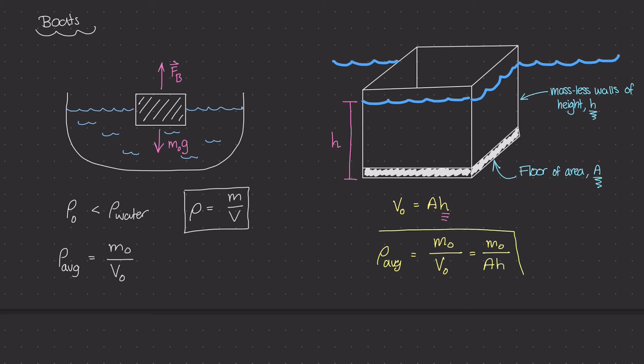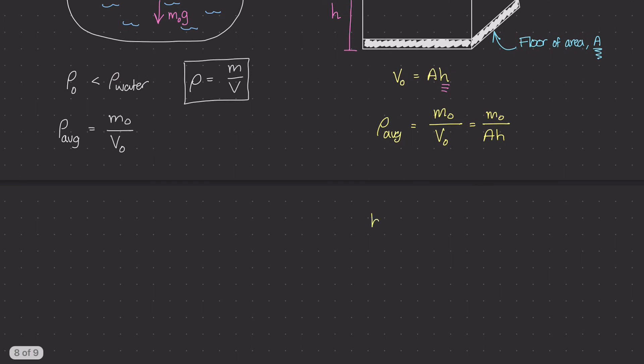If we take this equation and solve for h, then our h minimum value is going to have to be at least m₀ divided by ρ of the water times the area of the boat or the floor of the boat.